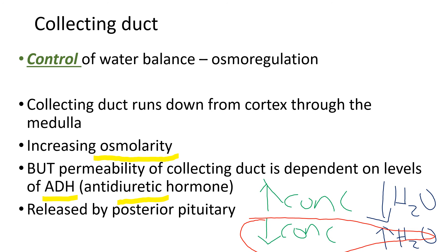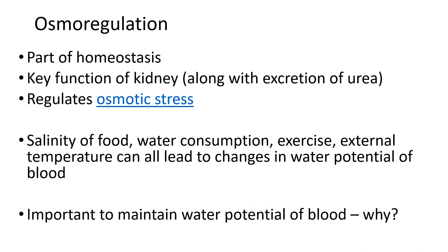ADH is released by the posterior pituitary and is under the control of the hypothalamus. The hypothalamus is where the receptors are - it detects the change. The hypothalamus is crucial in homeostasis as it also detects temperature. It will detect the water potential of the blood and the ion concentration, and if needs be, it will stimulate special nerves resulting in the release of ADH from the posterior pituitary. Osmoregulation is part of homeostasis and a key function of the kidney, regulating osmotic stress.